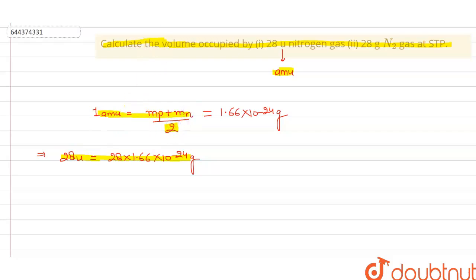Now at STP, which is called standard temperature and pressure, the value of temperature in STP is 273.15 Kelvin and the value of pressure is one bar or you can say that 100 kilopascal.